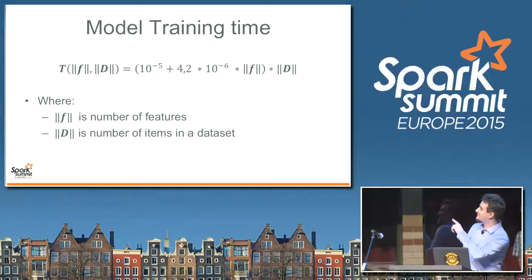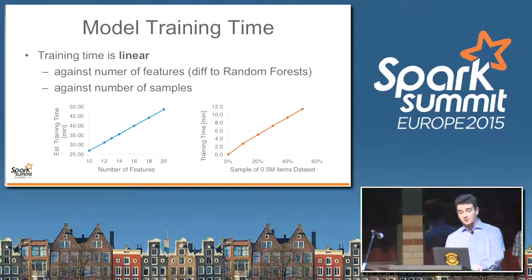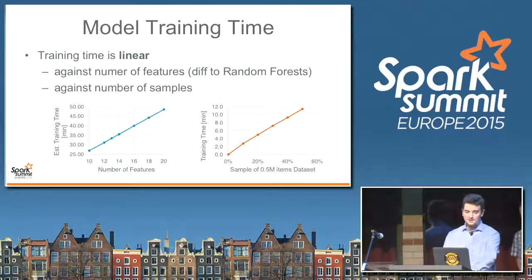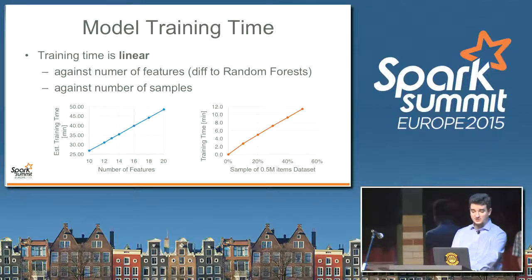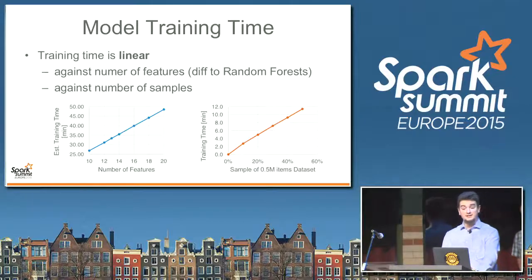Now, let's look at this using some charts. With a dataset of half a million items, 10 ferns, and using 10 features out of 90, model training takes about 27 minutes. Increasing the number of features to 20 results in about two times longer model creation. Let's fix the number of ferns and features to 10 and change the number of items used in model training. Training time is 3 minutes with 10% of the dataset and about 12 minutes with 50% of items. To sum up: assuming we have enough memory, a model will be created in reasonable and predictable training time.